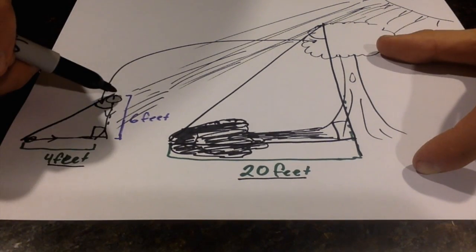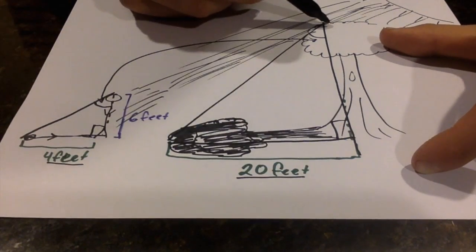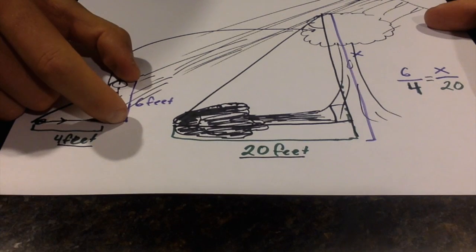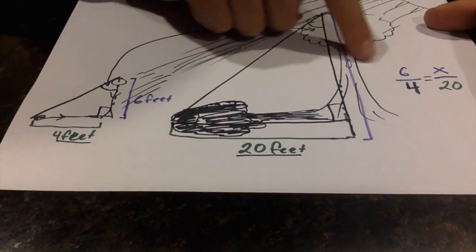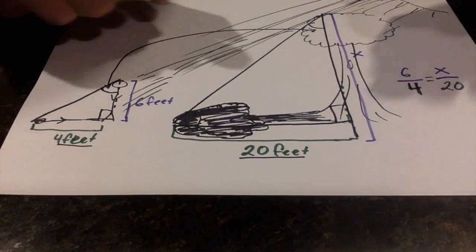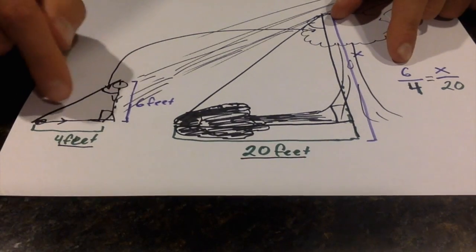We can now create a proportion to show the height of this is corresponding to this. So six right here is the vertical line to this triangle, and x is what we're going to label the height of this tree. I'm going to say that six and x are going to be our numerators.